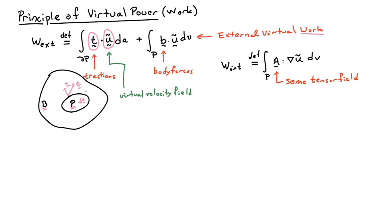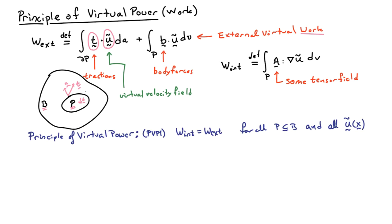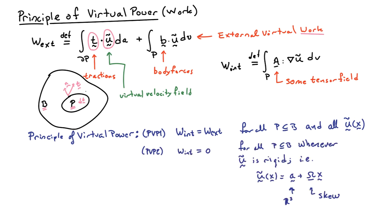The statement of the principle of virtual power comes in two parts. The first part says that the internal virtual power is equal to the external virtual power for all subsets P of the body and for all virtual velocity fields U tilde. The second part says that the internal virtual power is equal to zero for all parts of the body whenever the virtual velocity field is rigid.